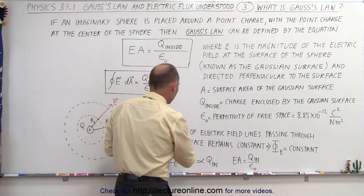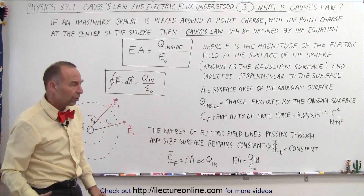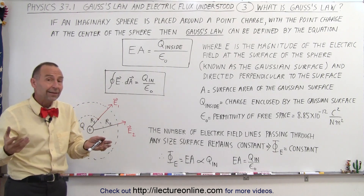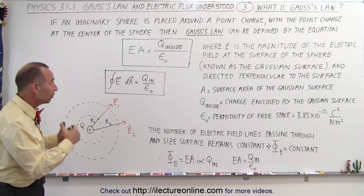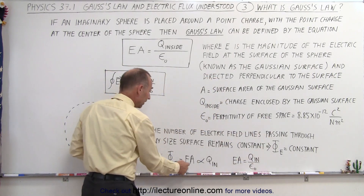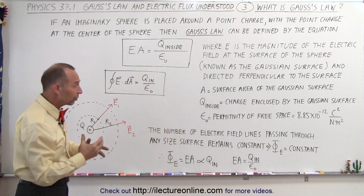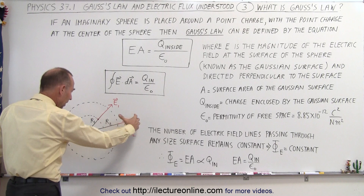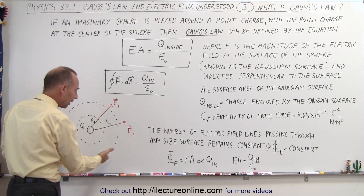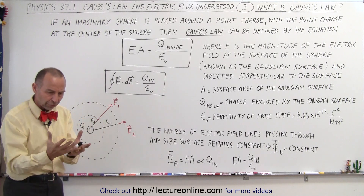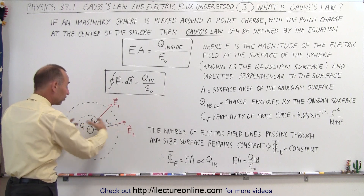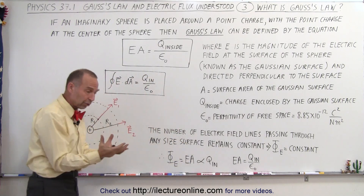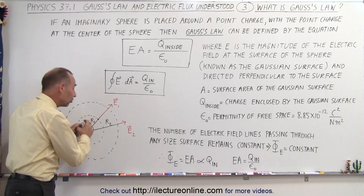If the number of electric field lines passing through the surface of any size always remains constant, and we multiply the strength of the electric field at the surface times the area of the surface, that defines the flux, as we saw in the previous video. The flux is simply the product of the electric field strength times the area of the surface. Gauss saw that if you put a surface around a charge, no matter how big or small you make the surface, the number of electric field lines will always be constant, meaning the flux through the surface remains constant. The product of the electric field magnitude times the area of the surface will be proportional to the size of the charge inside.